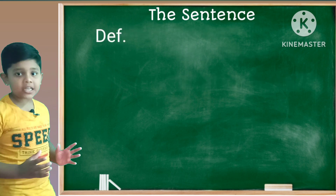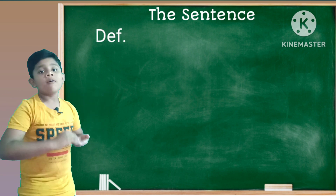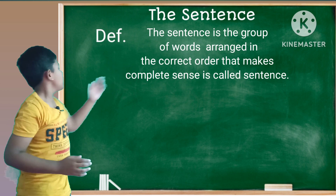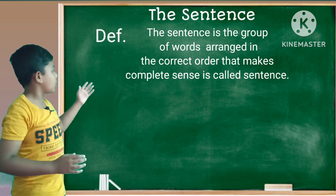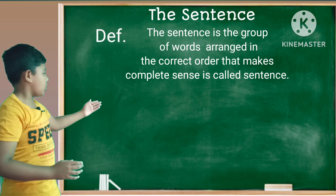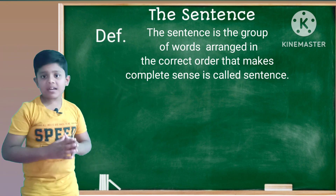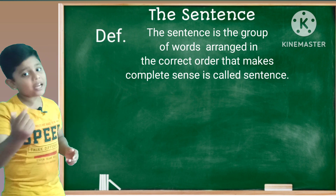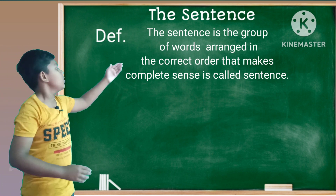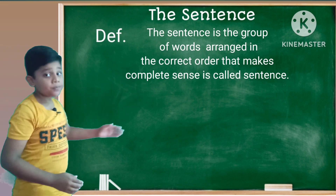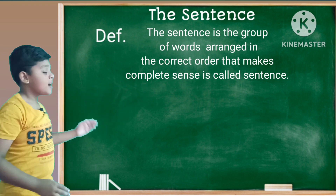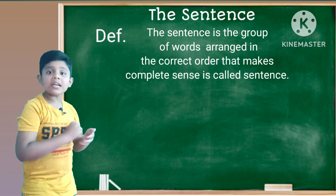Now let's see the definition of a sentence. A sentence is a group of words arranged in the correct order that makes complete sense. It's called a sentence.